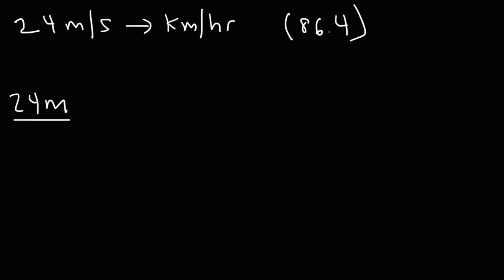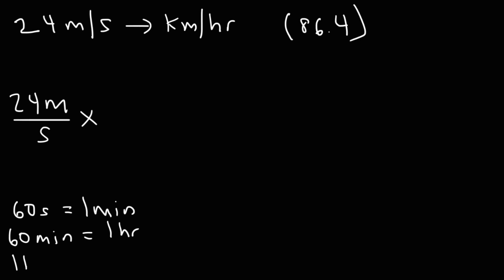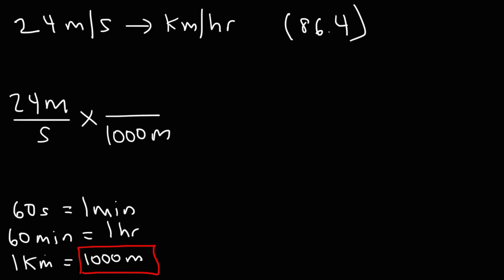Keep in mind: there are 60 seconds in 1 minute, 60 minutes in 1 hour, and 1 kilometer equals 1,000 meters. Let's convert meters to kilometers first. We have the unit meters on top, so we put meters on the bottom of the next fraction. Put 1,000 meters on the bottom and 1 kilometer on top, so the unit meters cancels. We now have the unit kilometers, which is what we want.